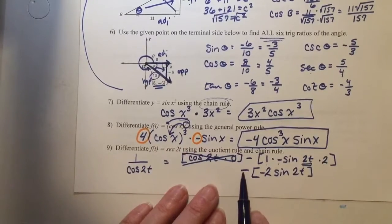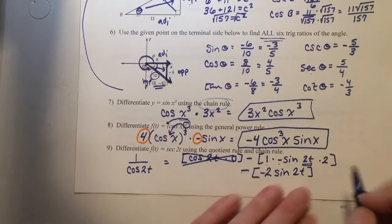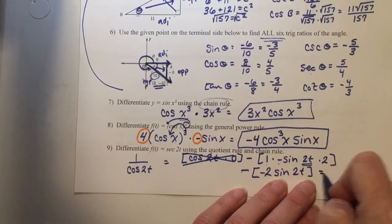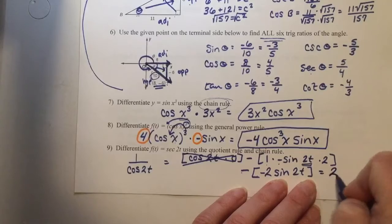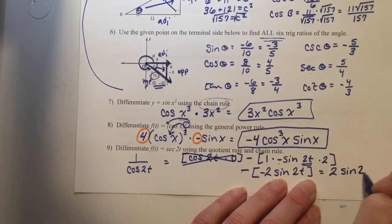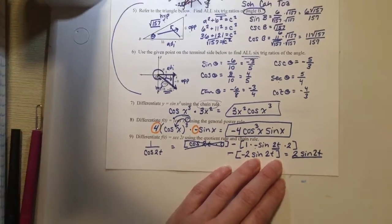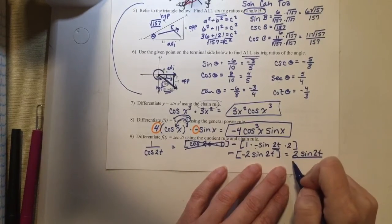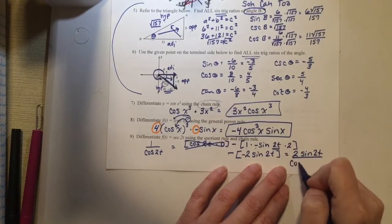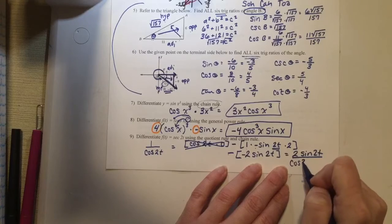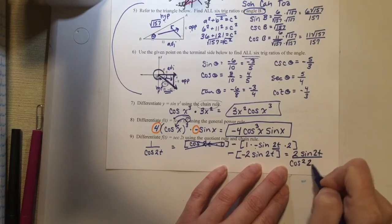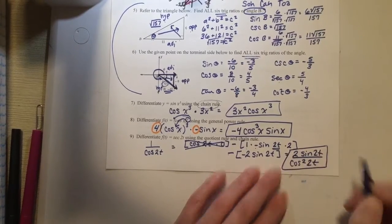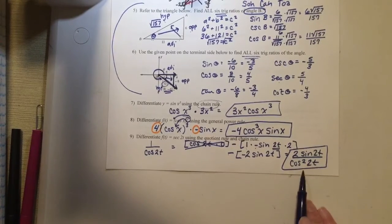Remember you always square what's on the bottom. So the bottom is cosine squared of 2t. That gives us 2 times the sine of 2t over cosine squared of 2t. If you got it to here, you have the correct answer.